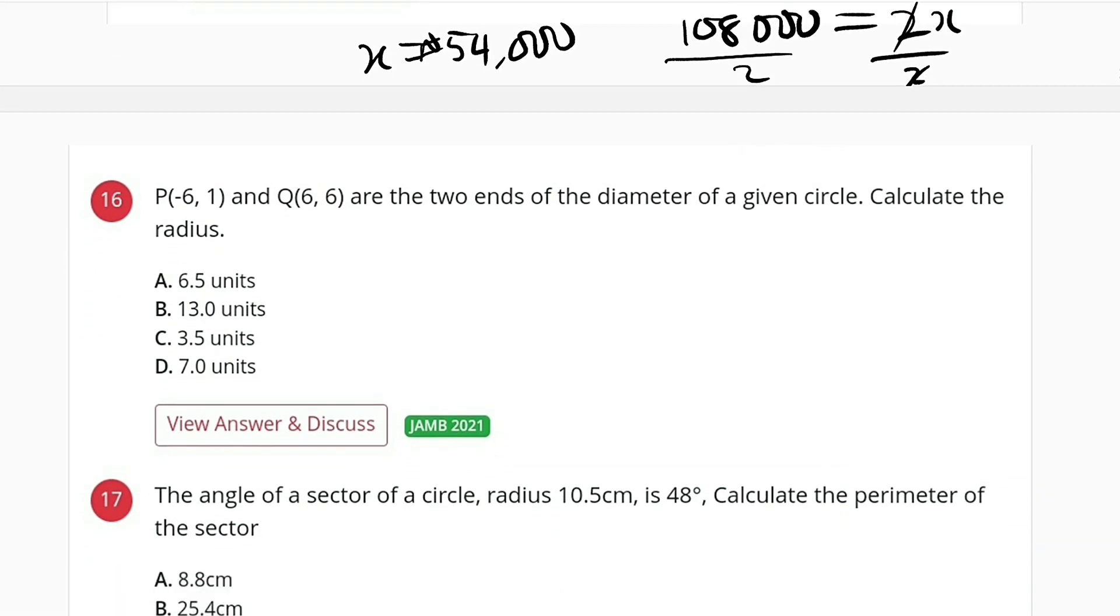Question number 16. We have two points, P and Q, which are two ends of a diameter. So if we have a circle here, this is the diameter. This point is (-6, 1), and this point is (6, 6). So we are asked to find the radius of this diameter.